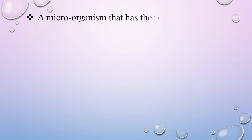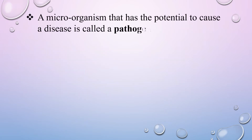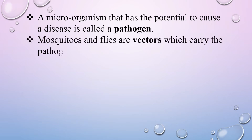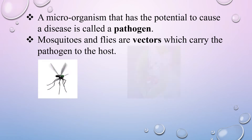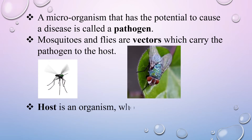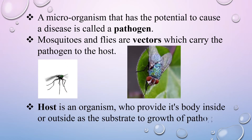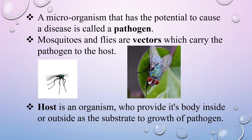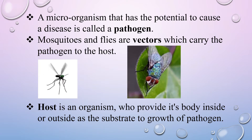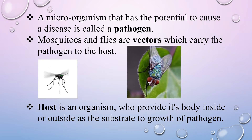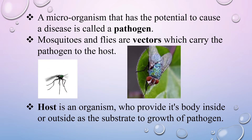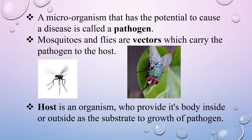A microorganism that has the potential to cause a disease is called a pathogen. Mosquitoes and flies are vectors which carry the pathogen to the host. The host is an organism that provides its body, inside or outside, as a substrate for the growth of the pathogen. For example, in Dengue disease, the virus acts as the pathogen, mosquitoes are the vectors, and man is the host for the Dengue virus.